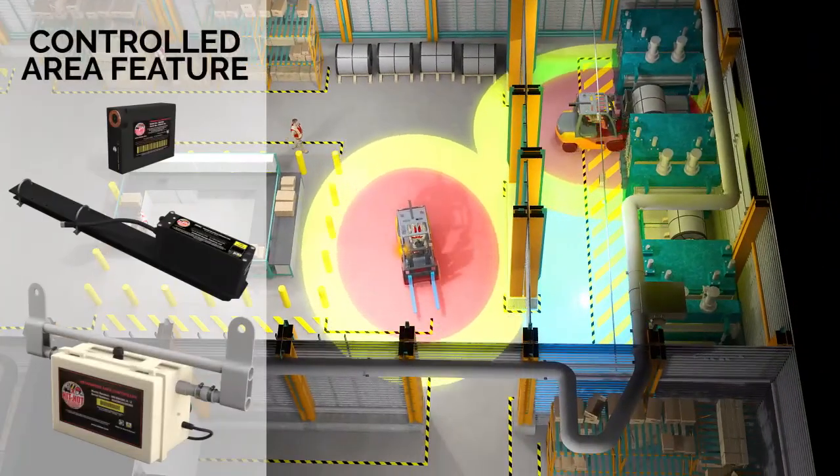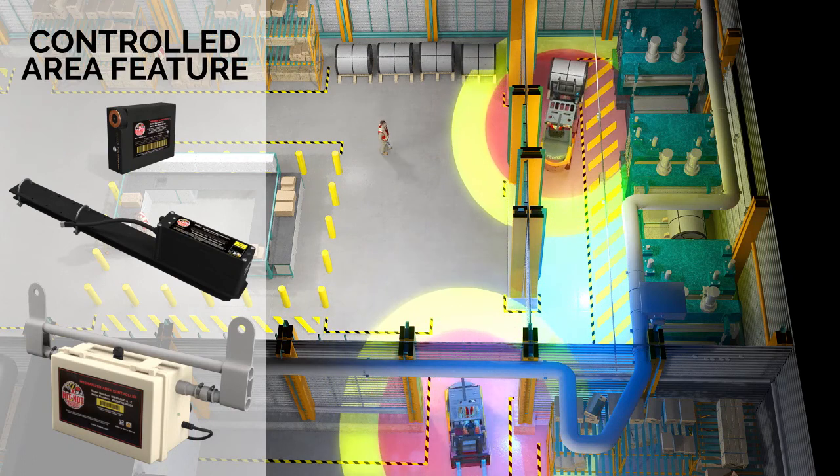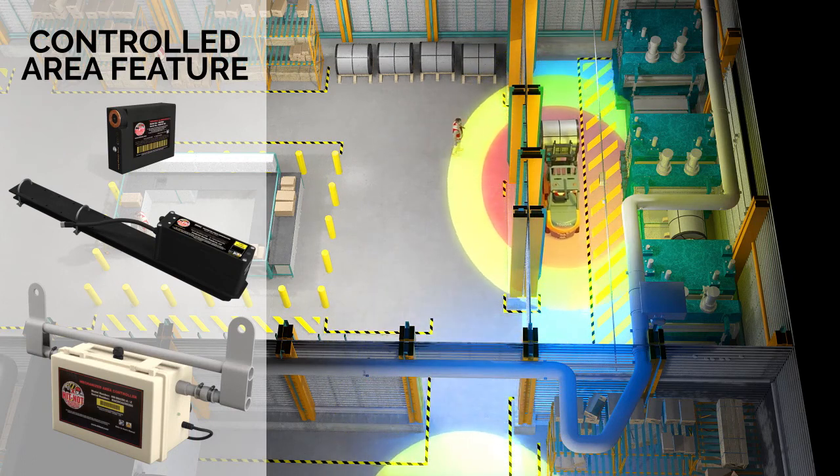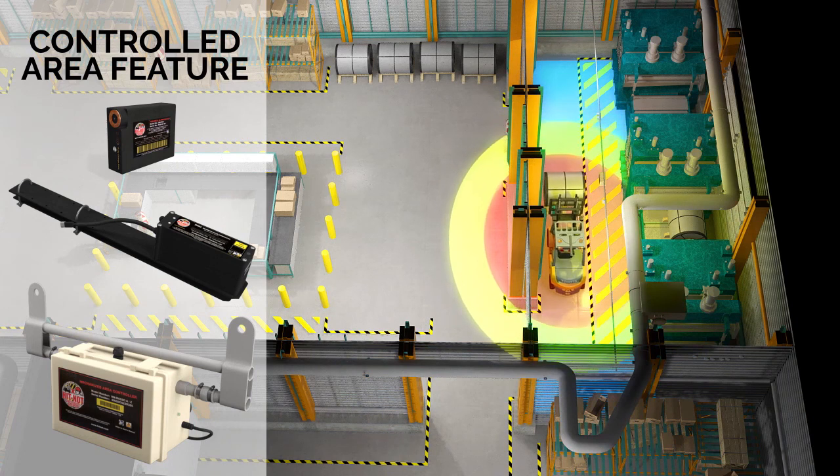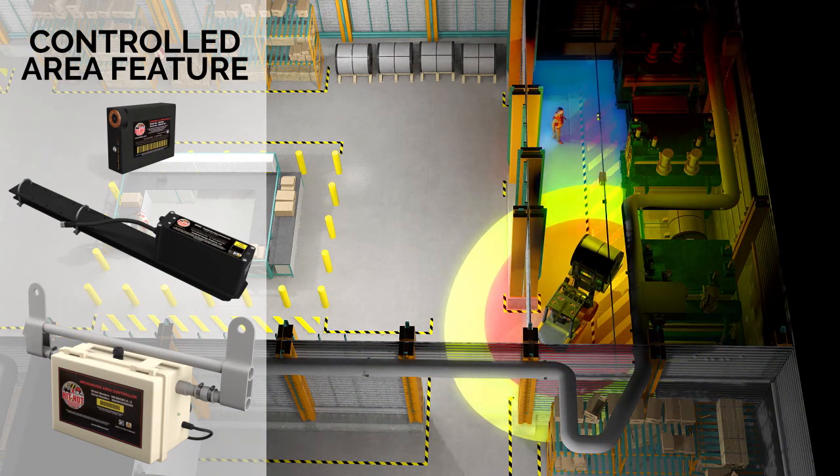The Mechanized Area Controller, or MAC, detects mobile equipment and pedestrians using a precise magnetic field. Those in the vicinity of the controlled area are alerted when mobile equipment or pedestrians enter the area, typically controlled by lights or other signaling devices.